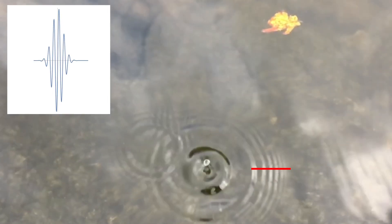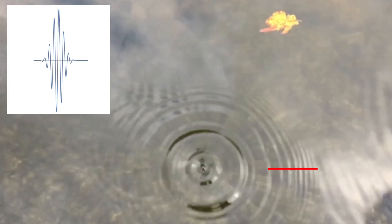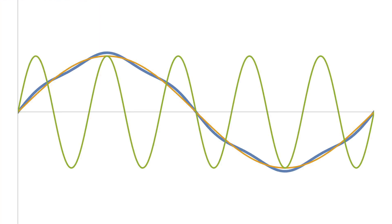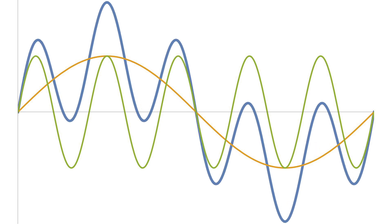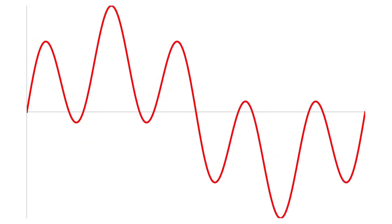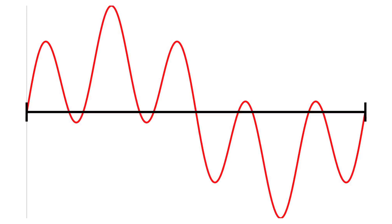Now for the wave packet to form, it has to be a combination of multiple waves with different wavelengths. When you take two sine waves with slightly different wavelengths, they'll interfere with each other, producing a wave with varying low and high amplitudes, just as you can see in this example. The region between the two points of zero amplitude is called the wave packet. By adding more frequencies, the length of the wave packet decreases and the amplitude increases.